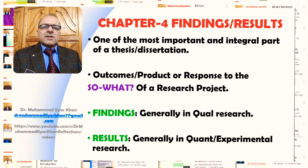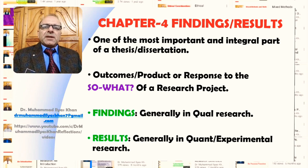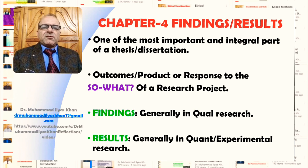In social science researches, generally in qualitative types of research, we call this section the findings section. But generally in quantitative or experimental researches, we call it results. In other cases, it depends on the particular pattern of the university or college where you are studying. In some cases, findings and results could both be used and taken as synonyms.